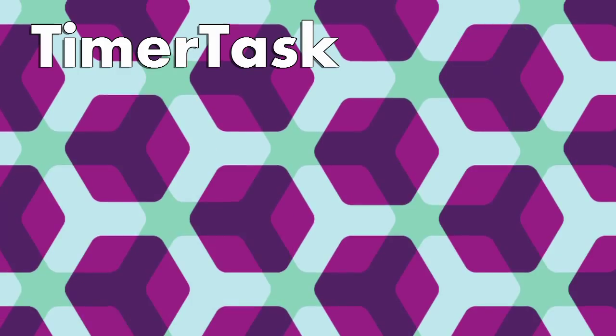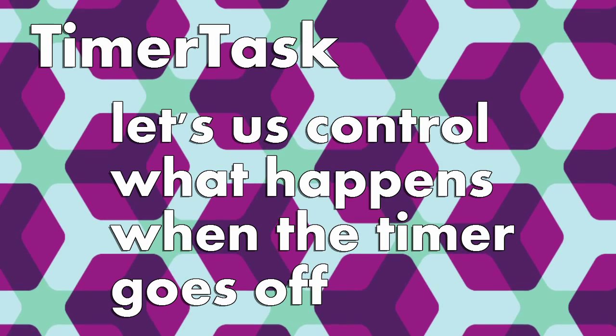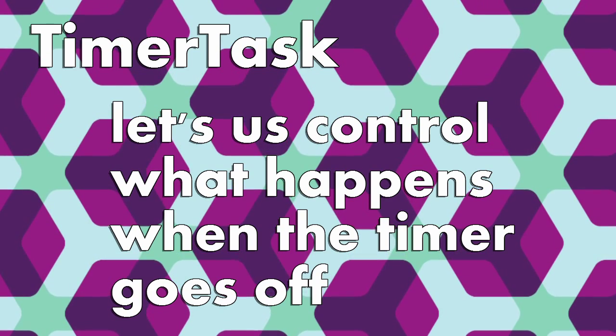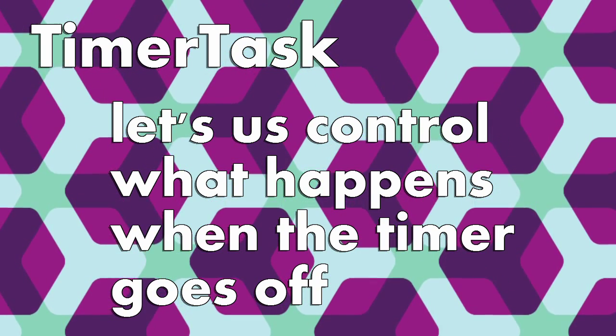We'll accomplish this using a timer. Just like everything in Java, a timer is a type of object. First we'll create a timer, then we'll create something called a timer task. The timer task lets us control what code is run when the timer goes off.